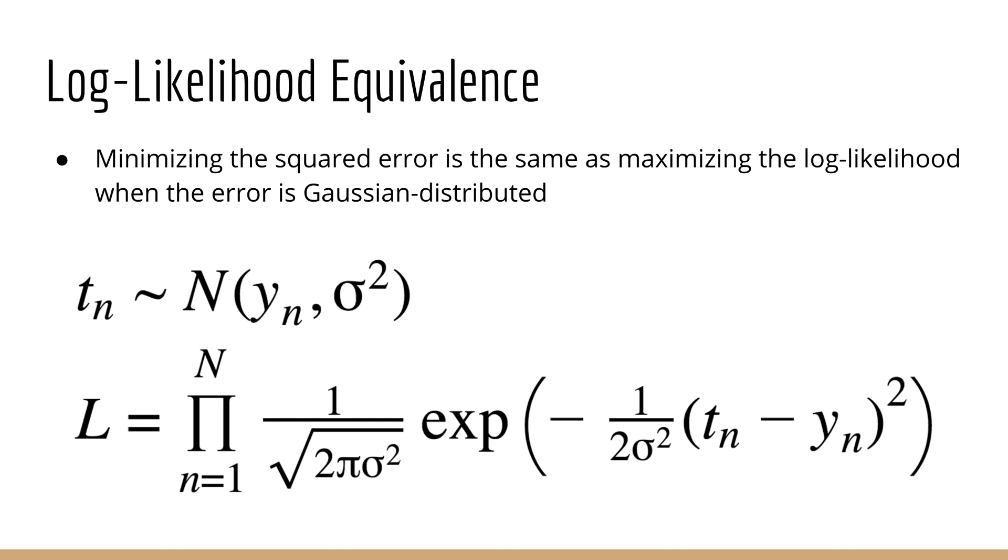Then, given this information, we can set up the likelihood function as follows. It's the product of each individual Gaussian PDF, where t of n is the random variable, y of n is the mean, and sigma squared is the variance.